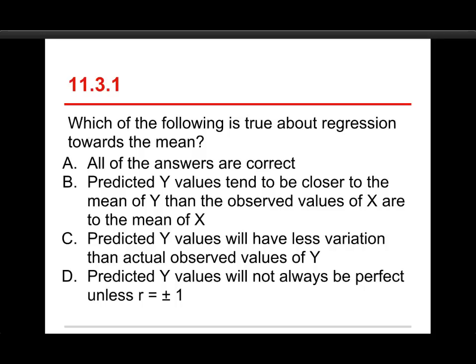The first question is, which of the following is true about regression towards the mean, sometimes called regression to the mean? A, one choice is that all of the answers are correct. B is that the predicted Y values tend to be closer to the mean of Y than the observed values of X are to the mean of X.